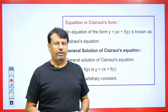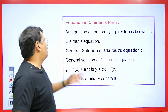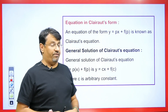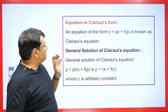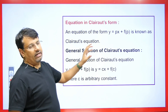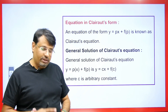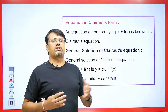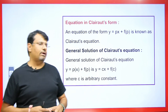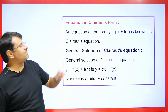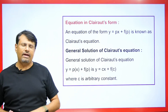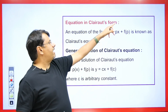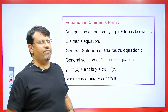Now, what is the Clairaut's form? An equation of the form y = px + f(p) is called the Clairaut's equation. This type of form is also given in partial differential equations where we call it the fourth standard form. Similarly, we have the Clairaut's form here in ordinary differential equations: y = px + f(p).